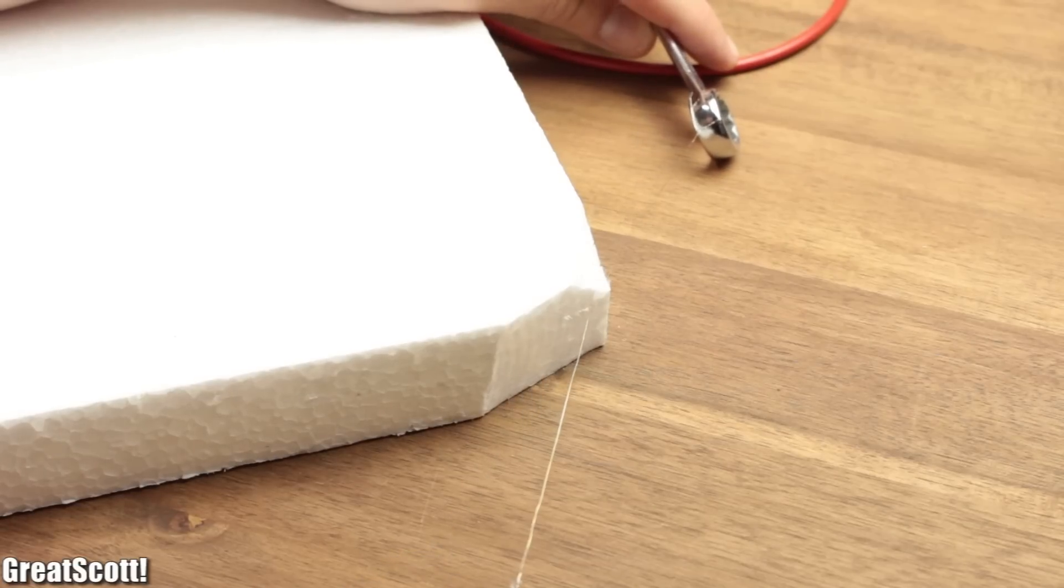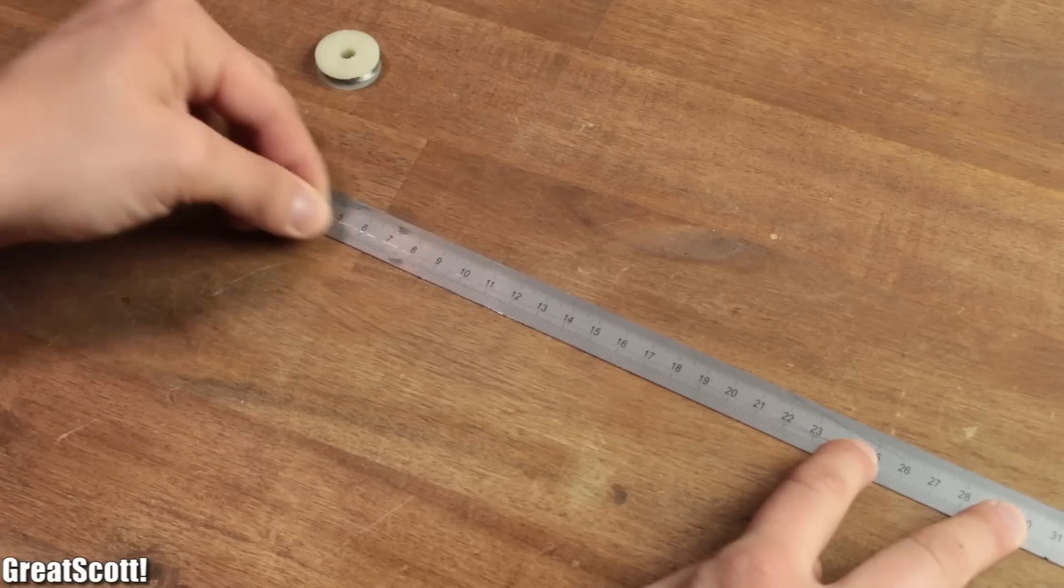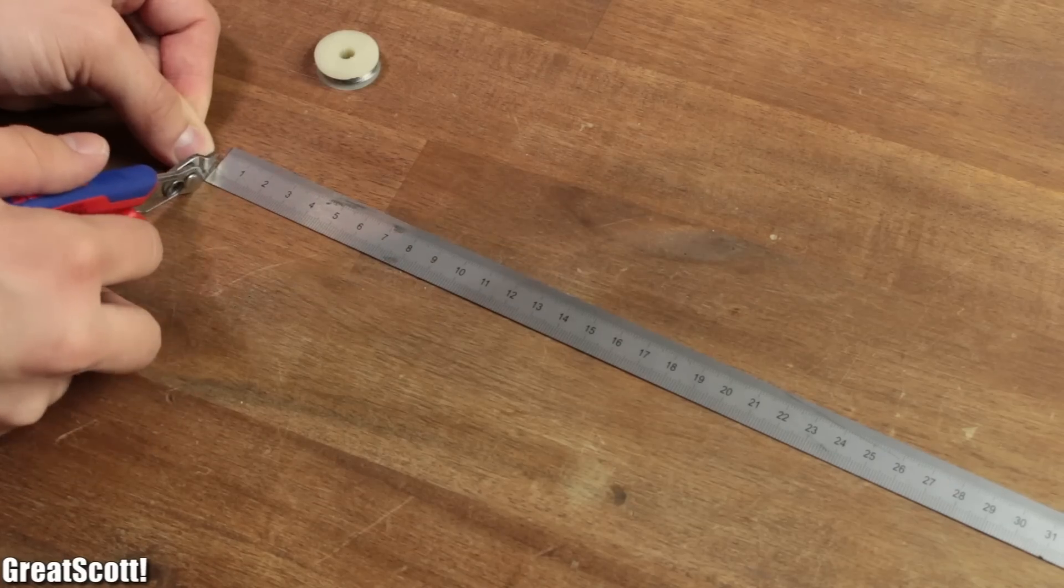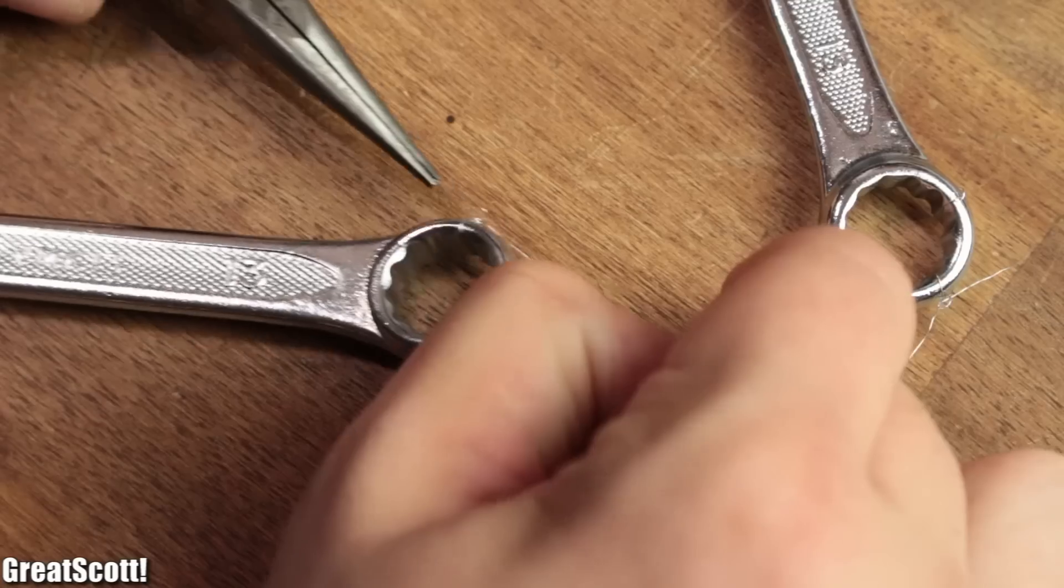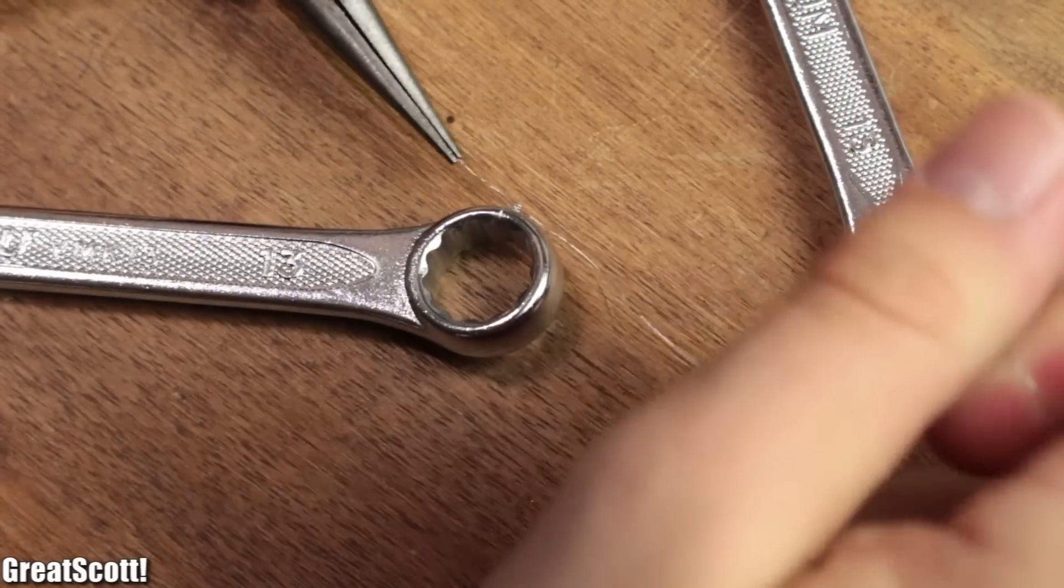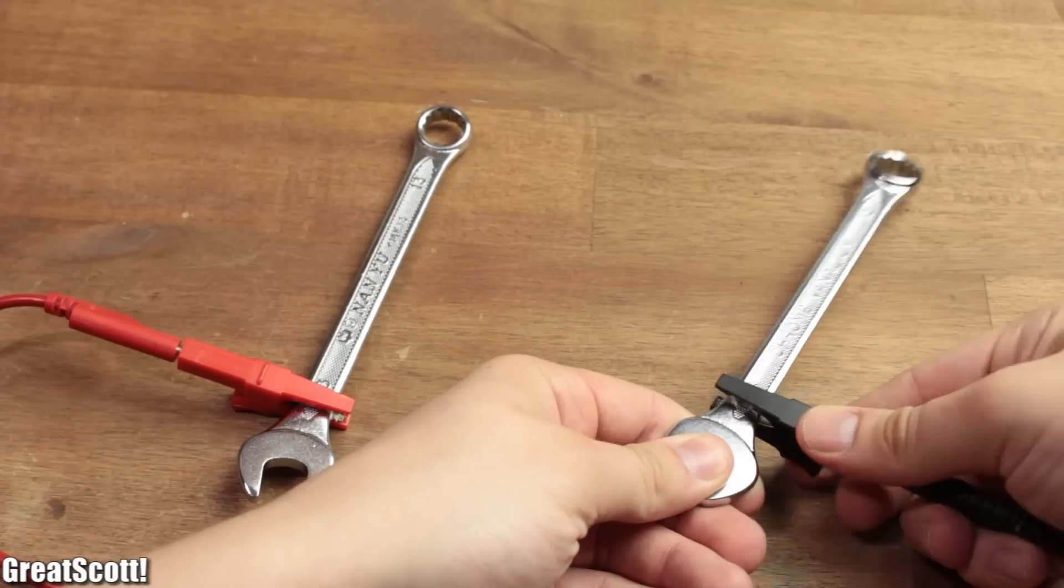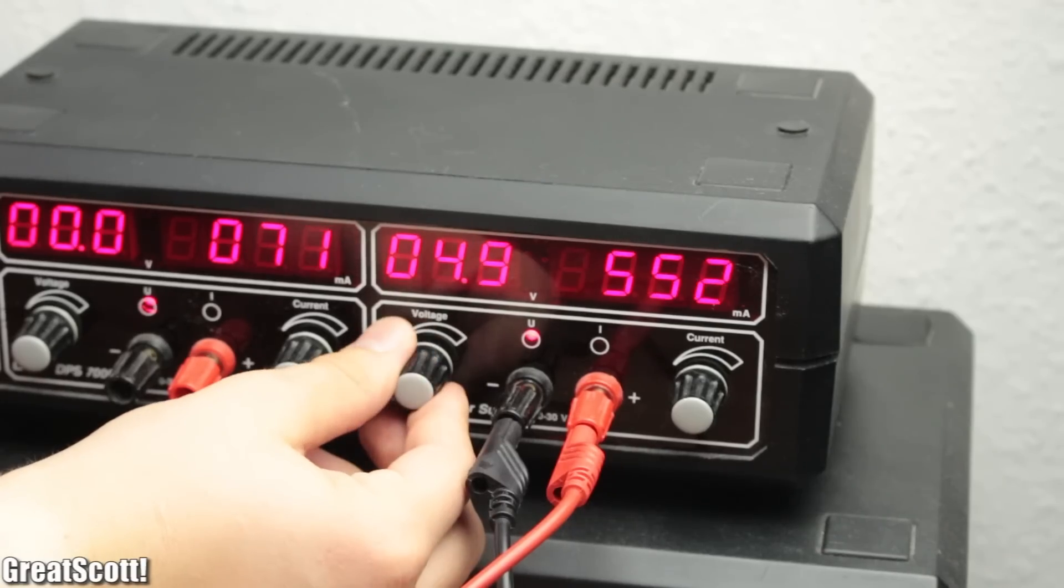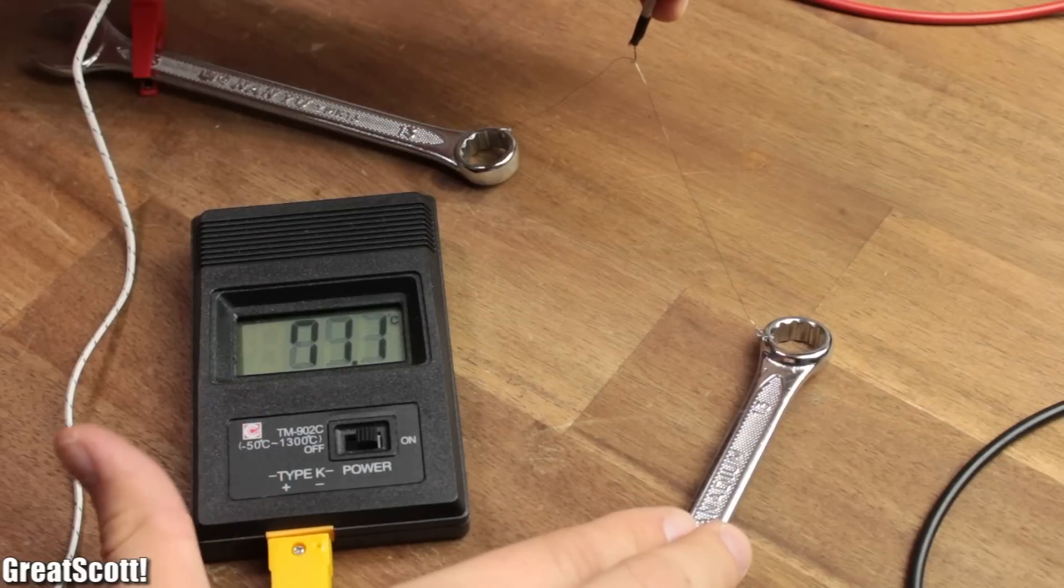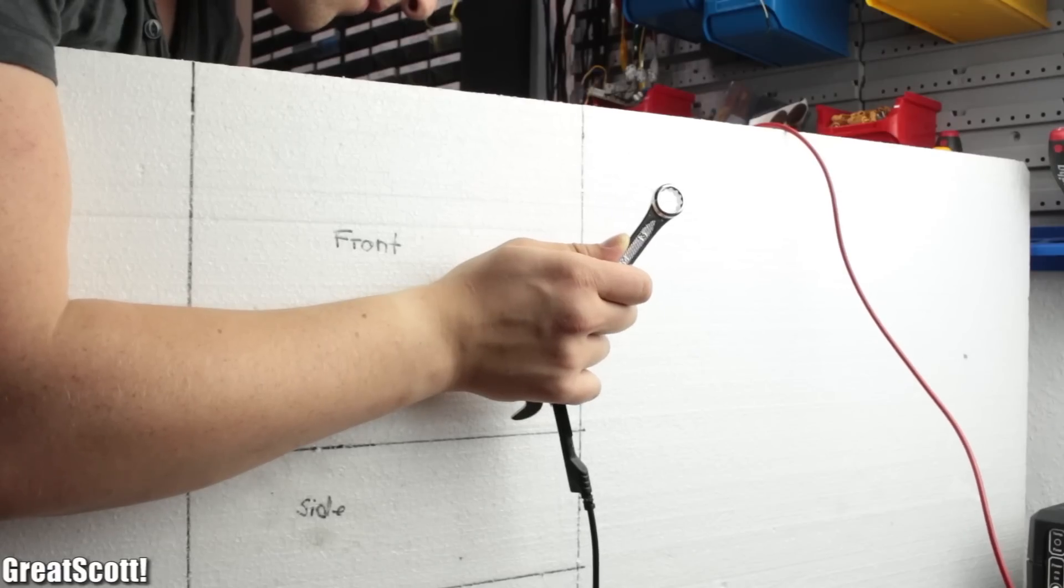To easily create my styrofoam shapes, I built myself a crude hot wire cutter. I simply measured out a length of 25cm of the wire and used two wrenches to secure the ends. Then I hooked it up to my power supply, which was set to a constant voltage of 5 volts and reached a high enough temperature to cut the styrofoam.